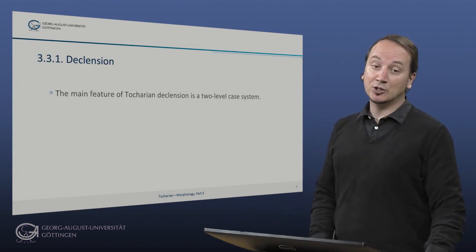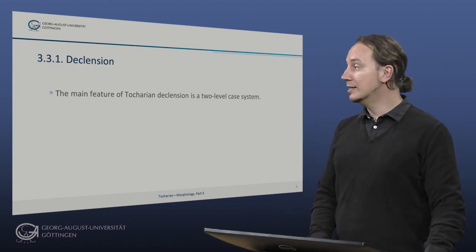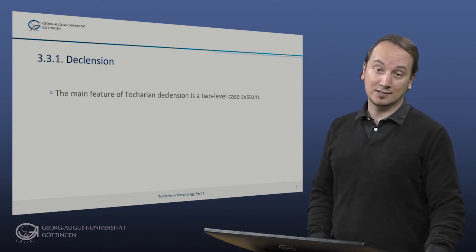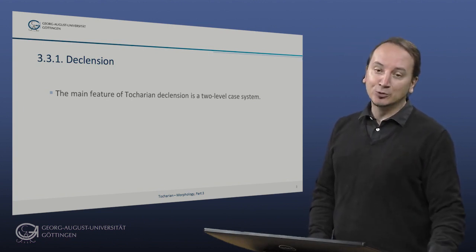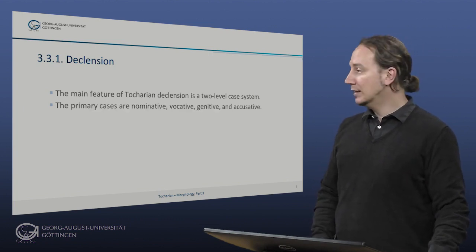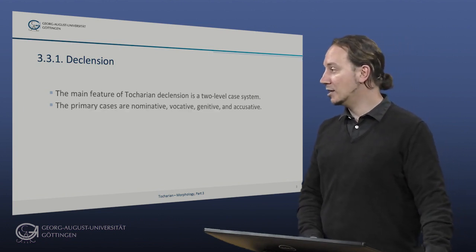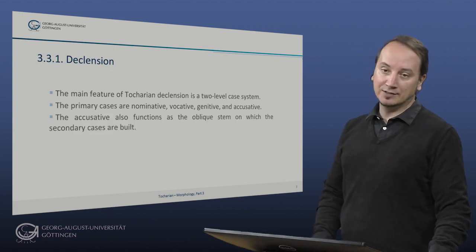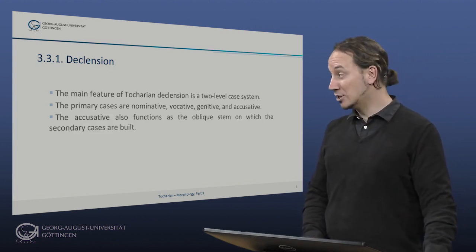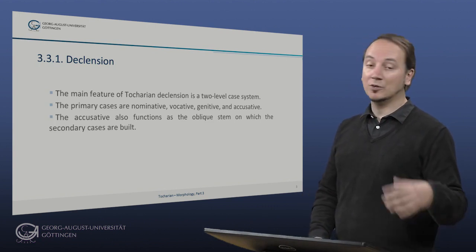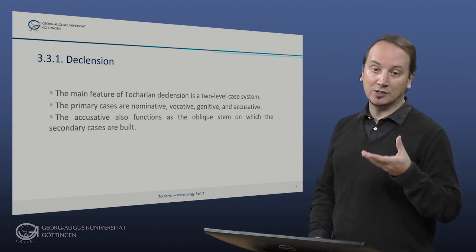The main feature of Tocharian declension is a two-level case system, which gives Tocharian a certain agglutinative feel. The primary cases are nominative, vocative, genitive, and accusative, and the accusative also functions as the oblique stem on which the secondary cases are built.